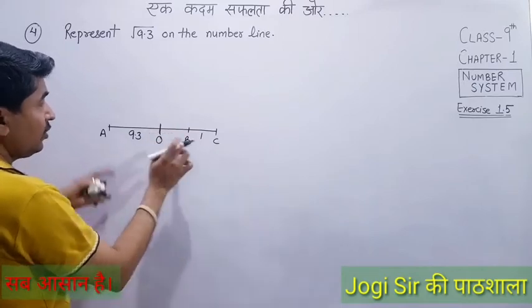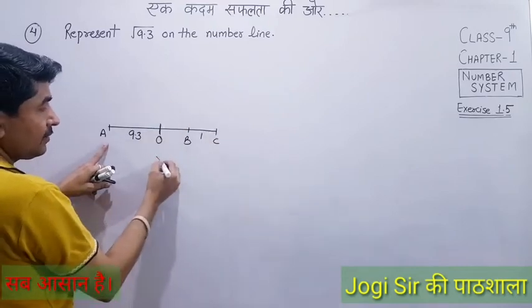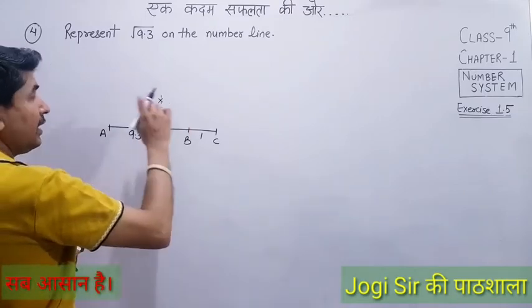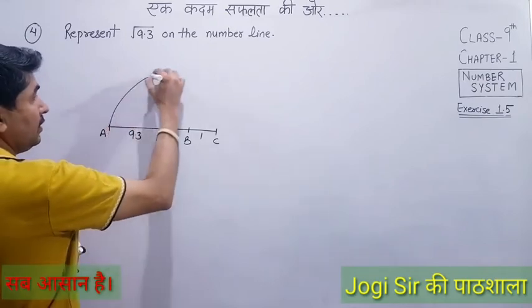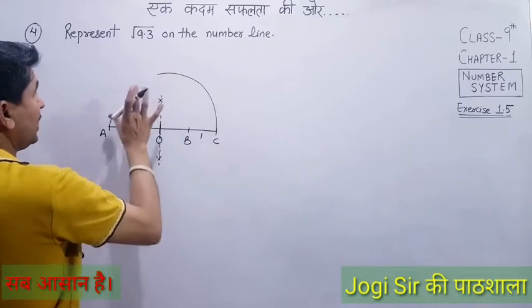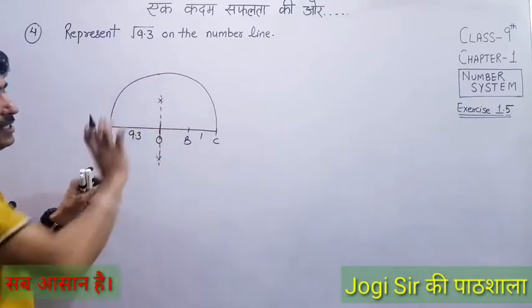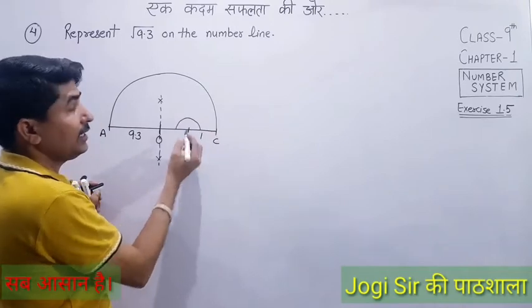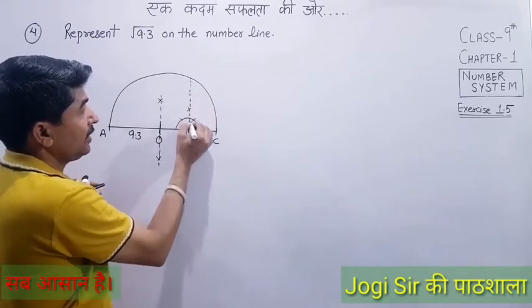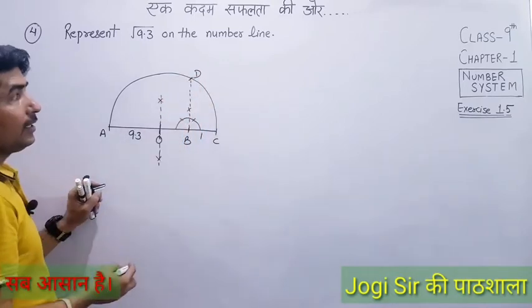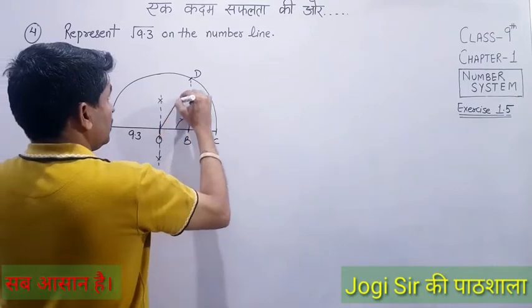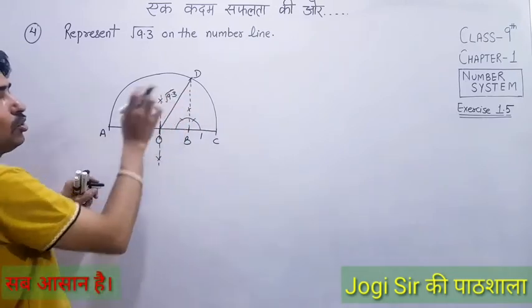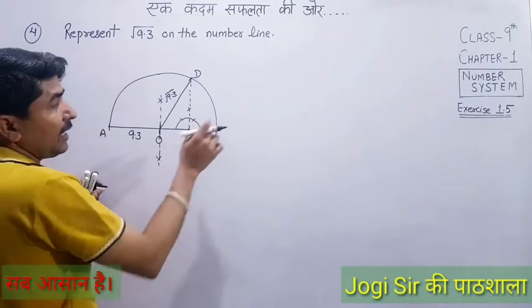After marking AC, find the midpoint O of AC — O is the half of AC. Using O as center, draw a semicircle up to point C. Next, at point B, draw a perpendicular — a 90-degree angle. This perpendicular will intersect the semicircle at some point; let that be D. Now join O and D.